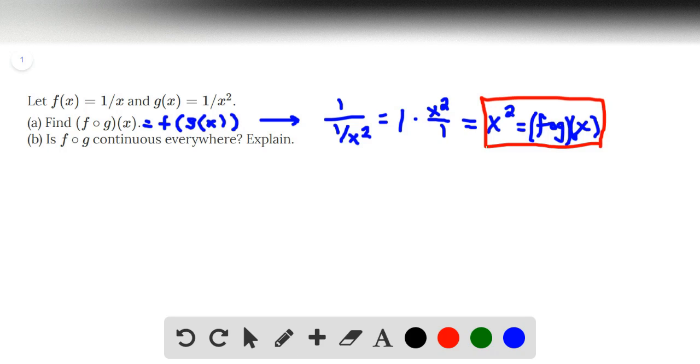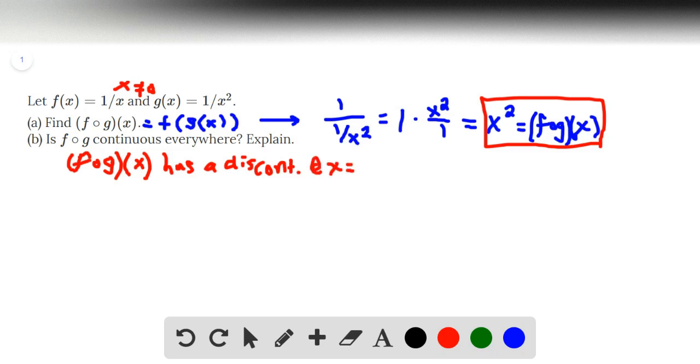this is a composite function of two different functions, both of which did not have x equals 0 in their domain. So, because that's how they started out, there was a discontinuity for each function at x equals 0. Then we say that f of g also has a discontinuity at x equals 0. So, it is not continuous everywhere.